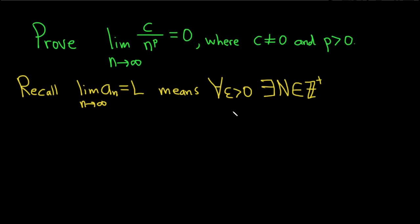For all epsilon greater than 0, there exists a capital N such that for all little n greater than capital N, we have the distance between a sub n and l is small. We can make it as small as we like.